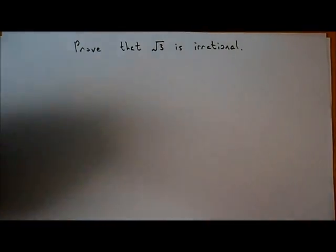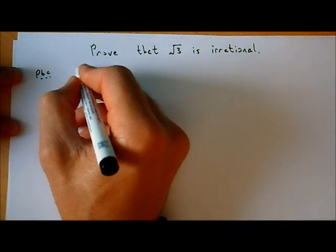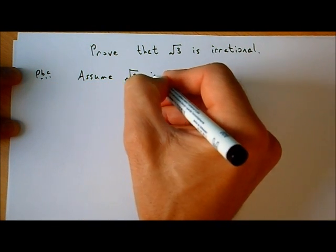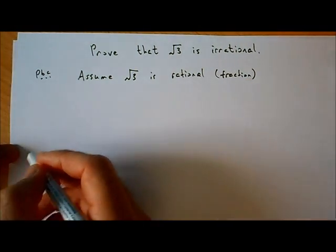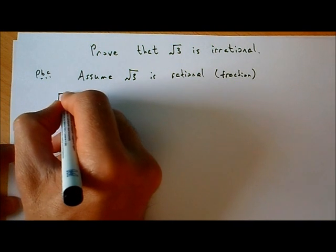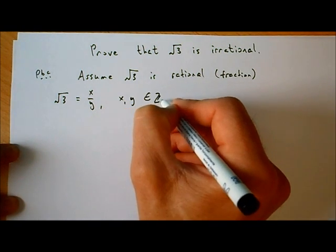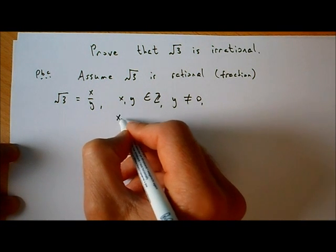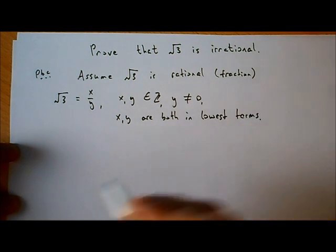So let's get to the proof. It's similar to the proof of root 2 — we're going to use a proof by contradiction. We're going to assume the opposite: we assume that the square root of 3 is rational. Rational just means a fraction. So if root 3 is rational, I can write it as x over y, where x and y are both integers, y is not zero, and x and y are in their lowest terms.